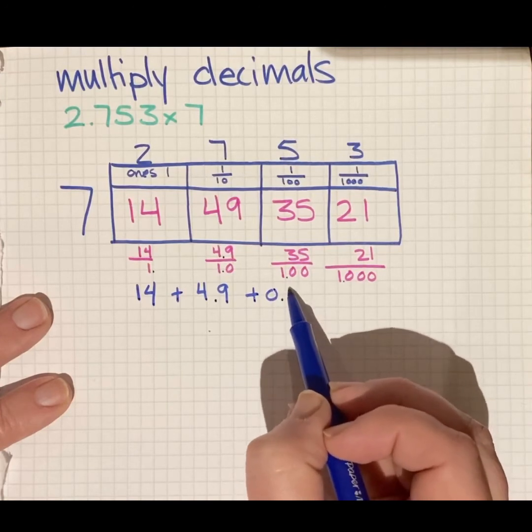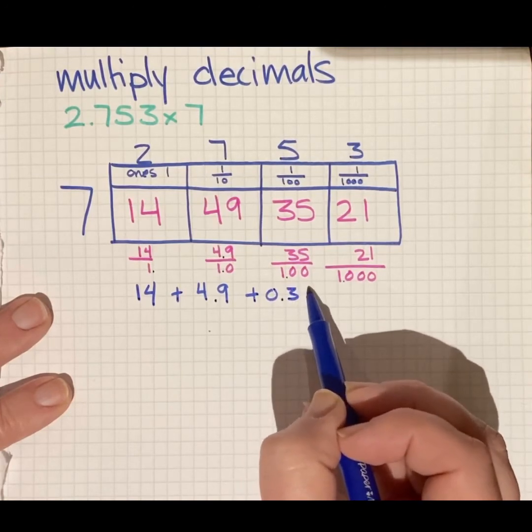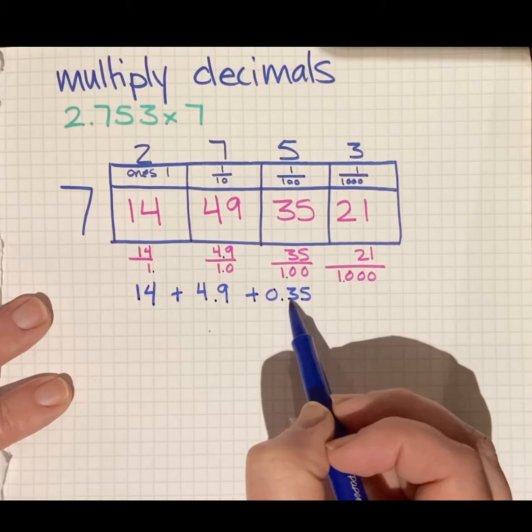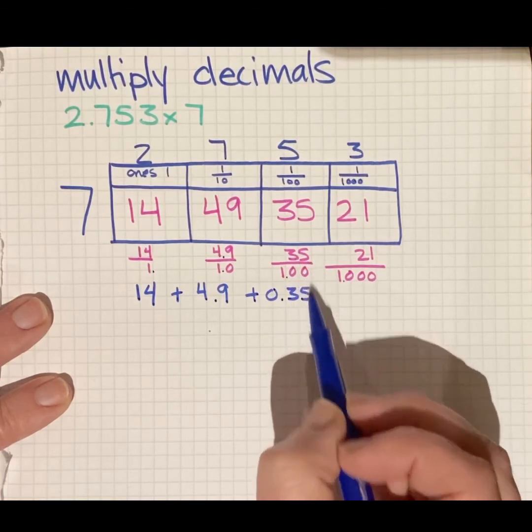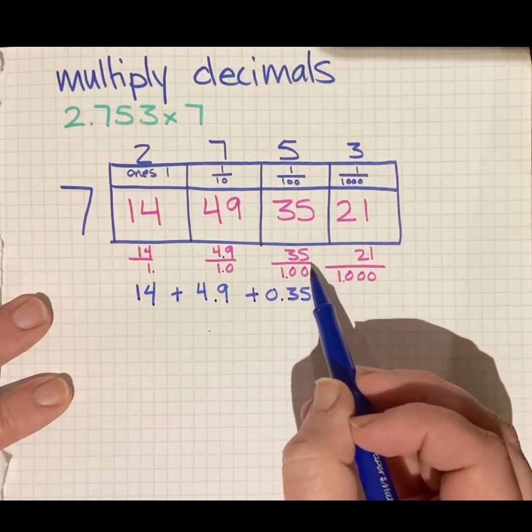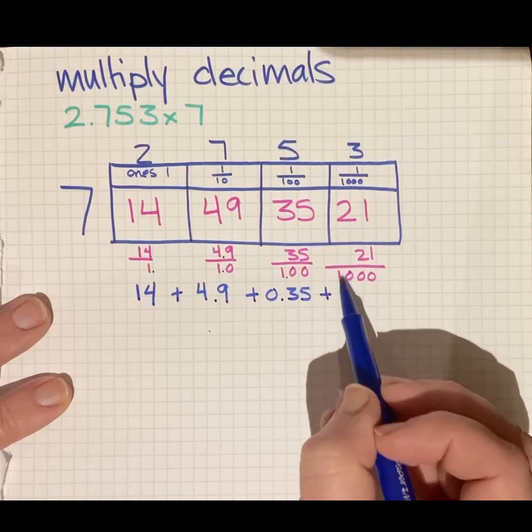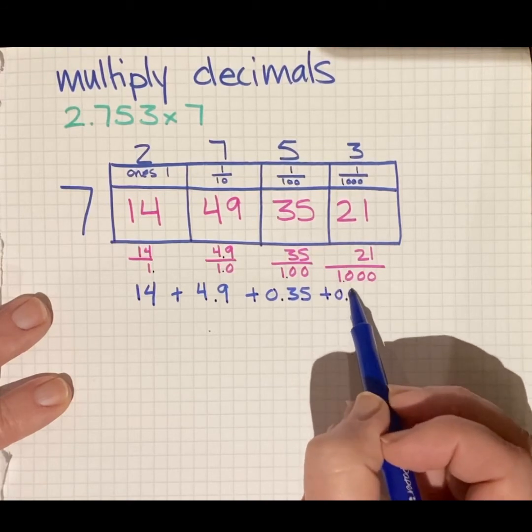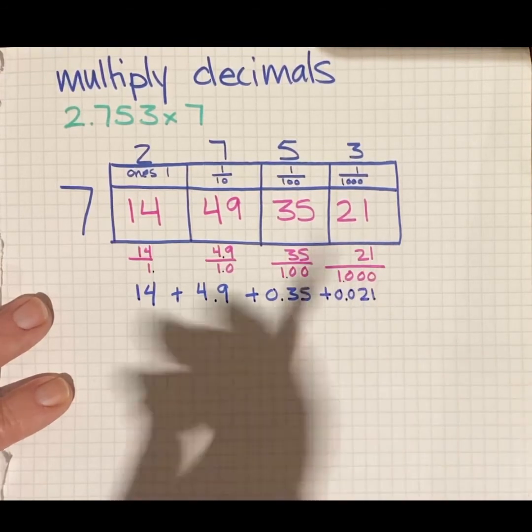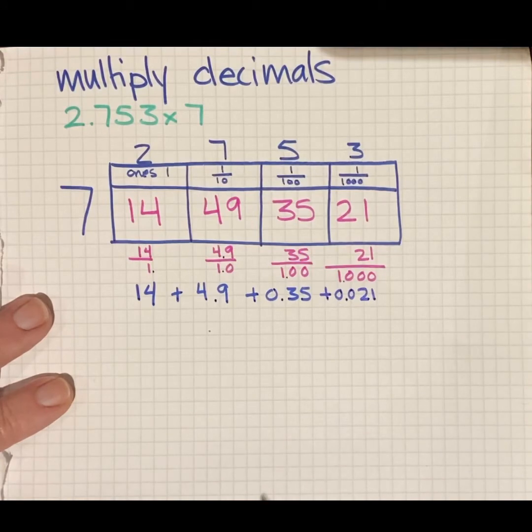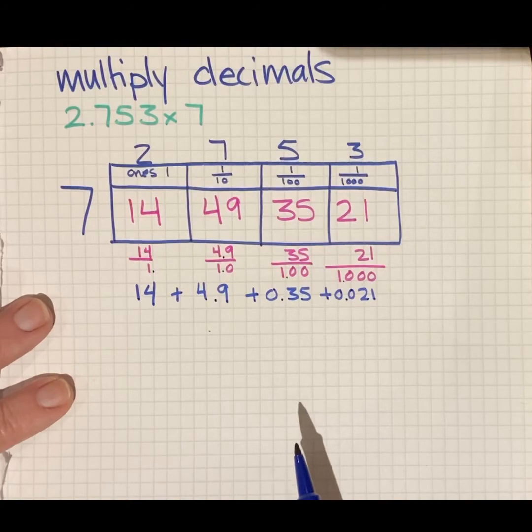So I have zero wholes. Three tenths, five hundredths. Thirty five hundredths is three tenths and five hundredths. Plus, remember, see how my fraction helps me get my decimal place in the correct place. My place values are all beautiful. And now this is just old school area model multiplication.